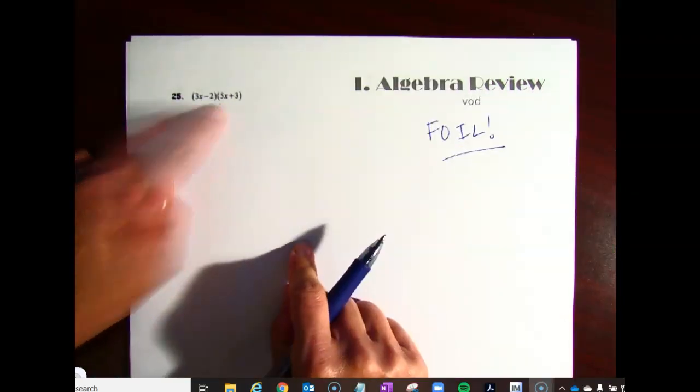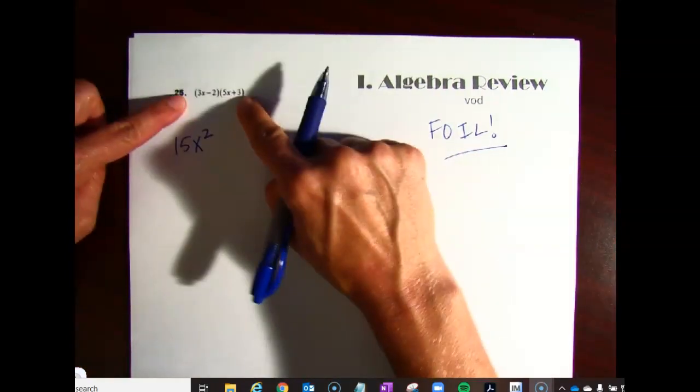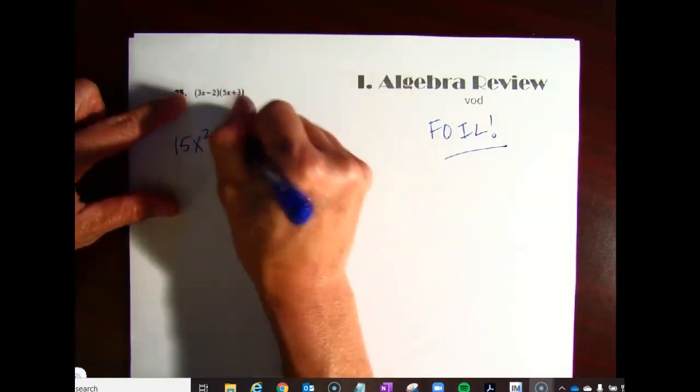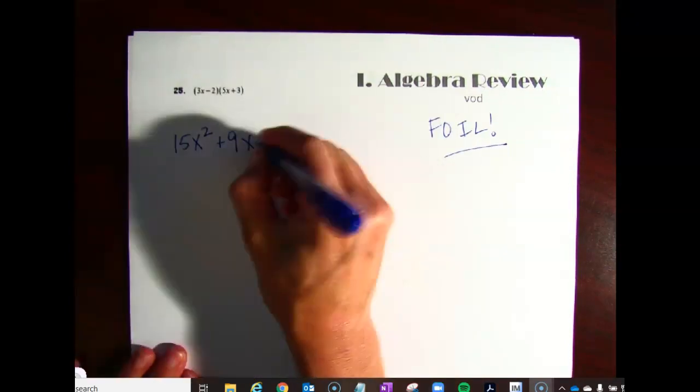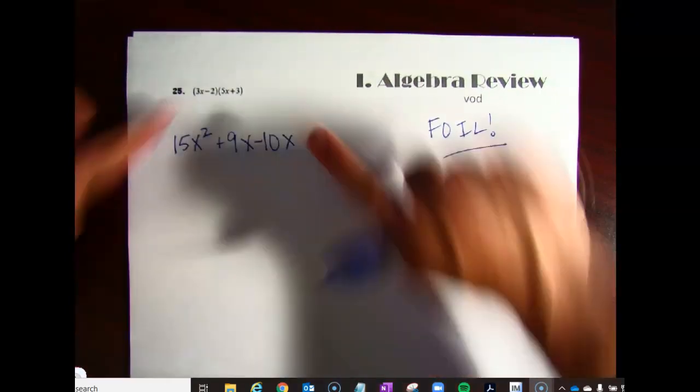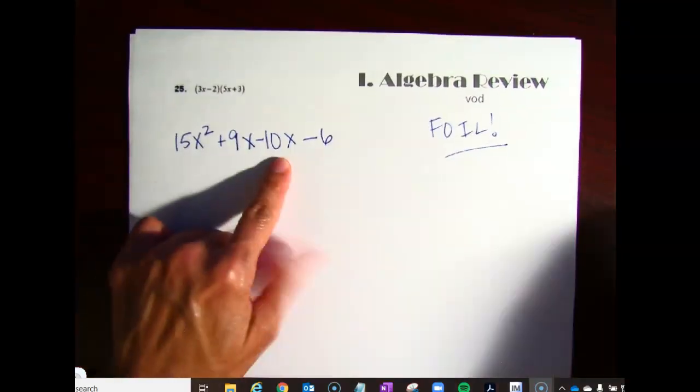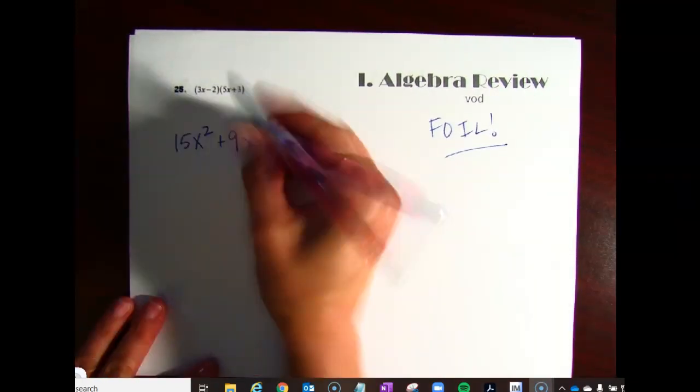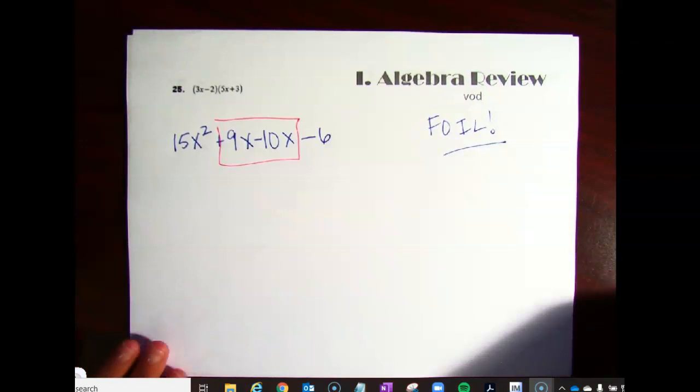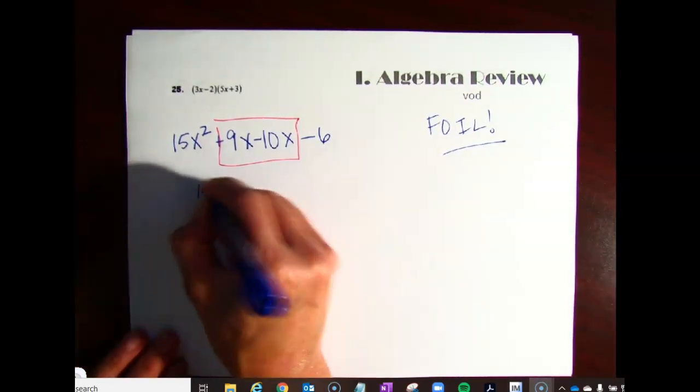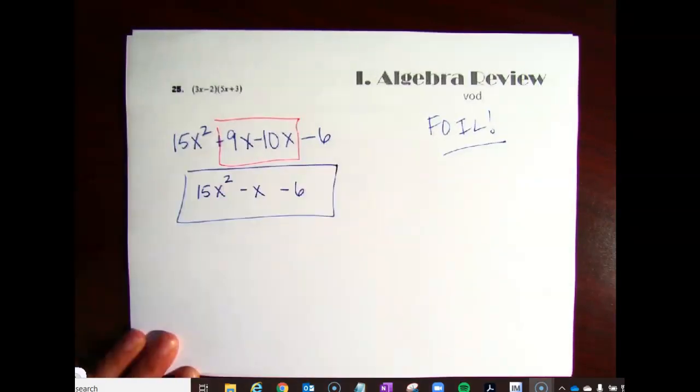So it's going to be 3x times 5x, which is 15x squared. The two outside terms, of course, are a positive 9x. The two inside terms are going to be a negative 10x. And the two last terms is going to turn into a negative 6. Remember, when you foil, you can always combine the two middle terms. So our final answer is going to be 15x squared minus x minus 6. And please box in your final answer.